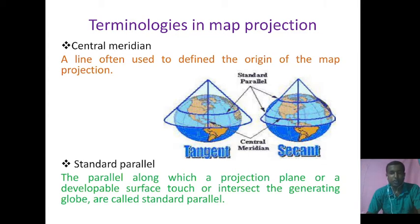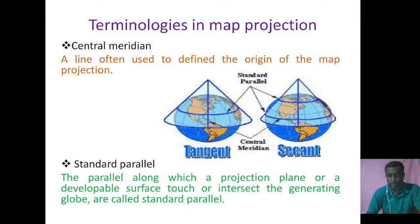Now I am talking about standard parallel. The parallel along which a projection plane or a developable surface touches or intersects the generating globe are called standard parallels. Along the standard parallels, the tangential scale is essentially one-to-one. Hence, these are always the lines of zero distortion. You can see the standard parallel in the given image.